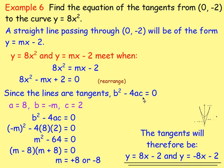The last example: find the equation of the tangents from (0, -2) to the curve y equals 8x². The tangent is y equals mx + c; since it passes through (0, -2), the y-intercept is -2, so y equals mx minus 2. Sub into the curve, rearrange to a quadratic. Since it's a tangent, b² - 4ac equals zero. Subbing in a, b, and c gives m equals 8 or m equals -8. So the two tangent lines are y equals 8x minus 2 and y equals -8x minus 2.